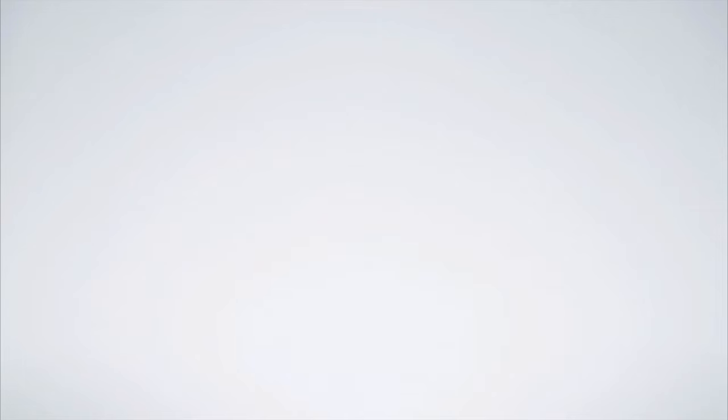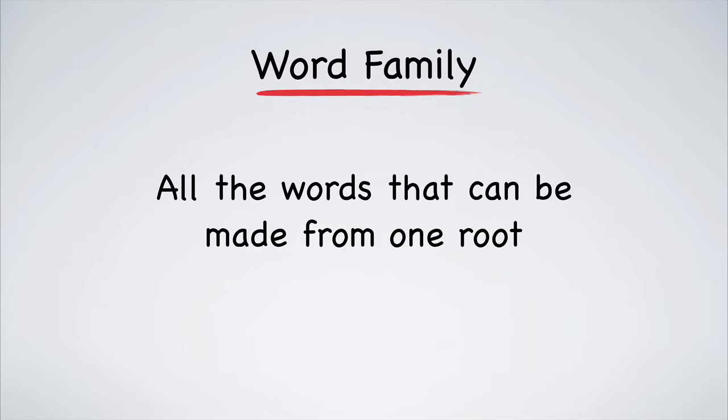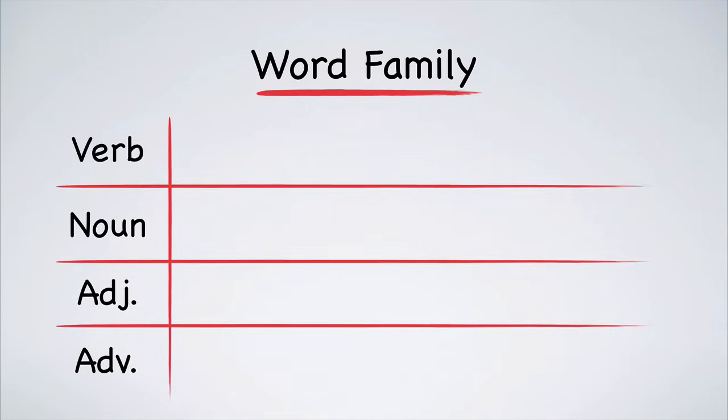Before we finish, there is one more important idea for us to look at, and that is the word family. A word family is all of the words that can be made from a single root. Take a look at this verb: expect. We can make the noun expectation. We could also make an adjective, expectant, or the adverb expectantly.